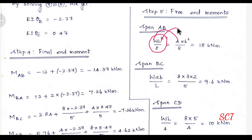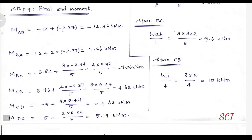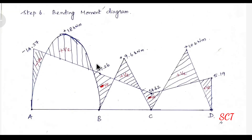Step 5: Free end moments. For span AB: 4 kN/m UDL, length 6m, solving gives 18 kNm. For span BC: A value 3m, B value 2m, W = 8 kN, substituting the formula gives bending moment of 9.6 kNm. For span CD: central load, formula WL divided by 4, W = 8 kN, L = 5m, solving gives 10 kNm.